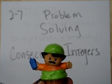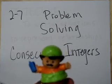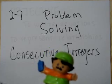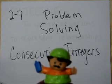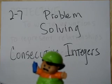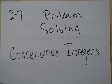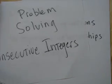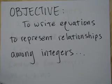Section 2-7, Problem Solving, Consecutive Integers. What is the objective? To write equations to represent relationships among integers.